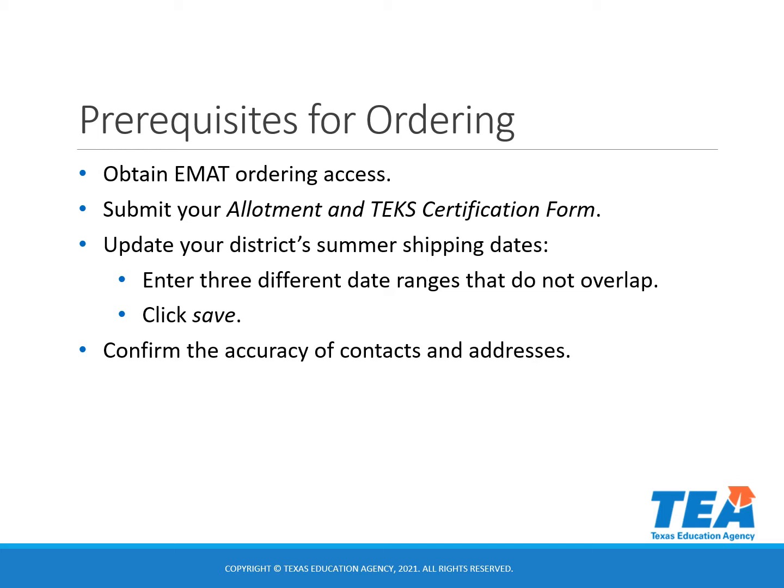Several prerequisites must be fulfilled prior to ordering. If you do not already have EMAT ordering access, you must obtain it through the TEAL system. Submit your allotment antique certification form. Update your district's summer shipping dates. Enter at least three different date ranges that do not overlap when someone will be available to receive shipments at your district. Then click Save.